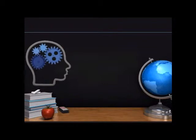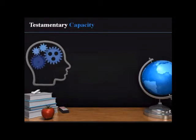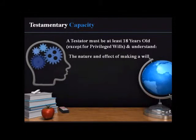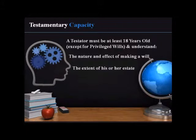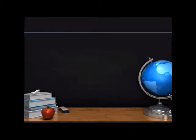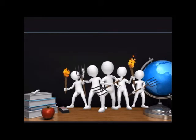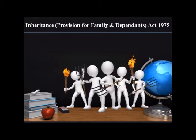The terms of a will are only binding if at the time of writing the testator has the required capacity. To pass the capacity test, the testator must be at least 18 years old and be aware of the nature and effect of making a will, the extent of his or her estate and any potential claims from those who might expect to benefit from the will. Failure to provide adequately for a dependent or other relevant person in your will could lead to a successful claim being brought against your estate under the Inheritance Provision for Family Independence Act 1975.